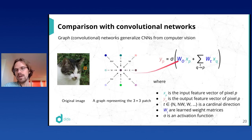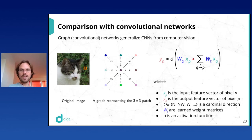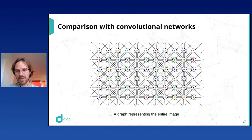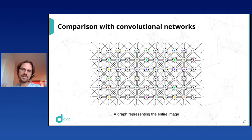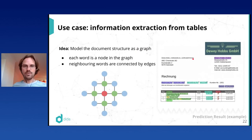This graph would represent the entire image. A graph neural network can take in graphs of arbitrary shapes, while a conv net is specialized to this regular grid-shaped graph. So conv nets are a particular case of GNN layers.